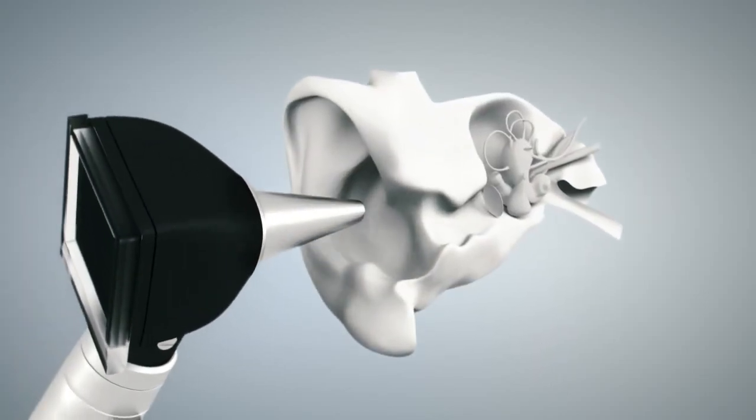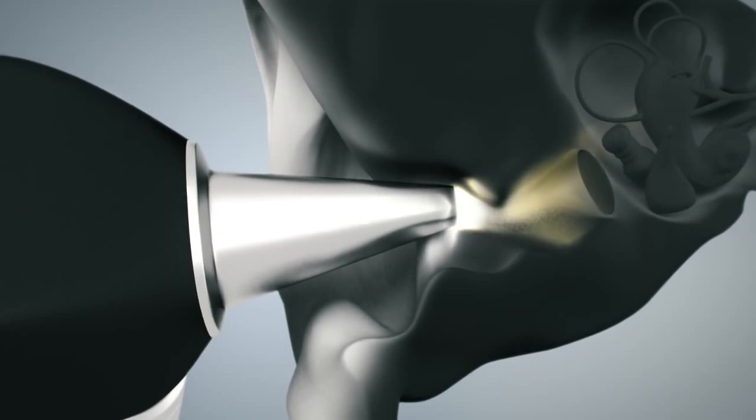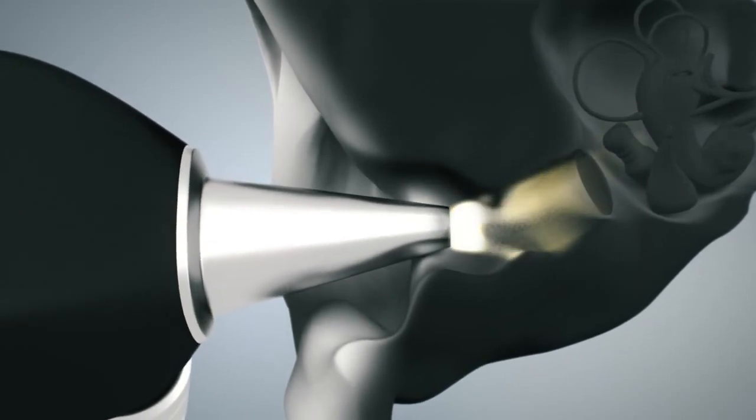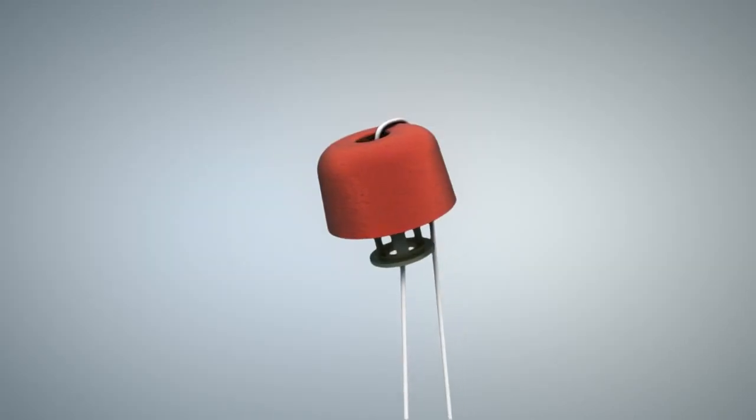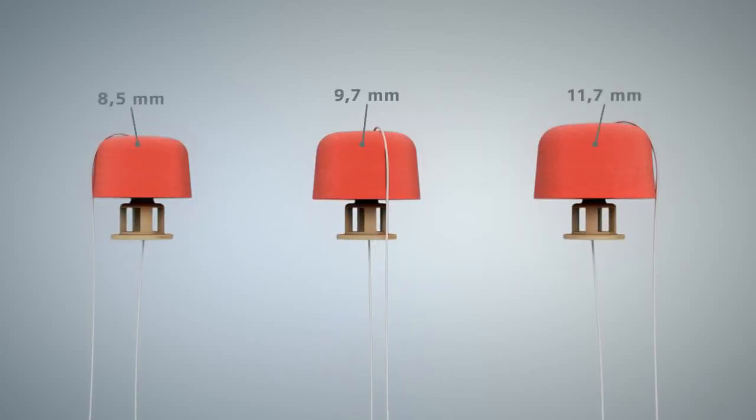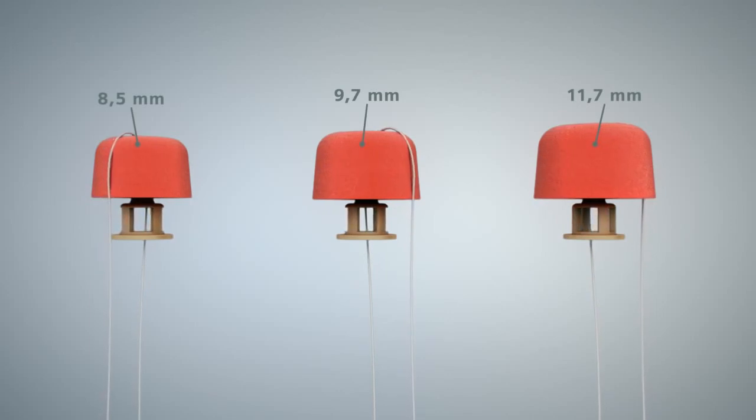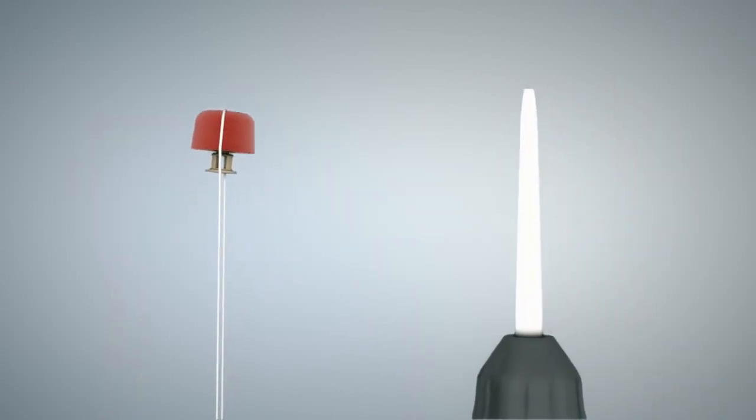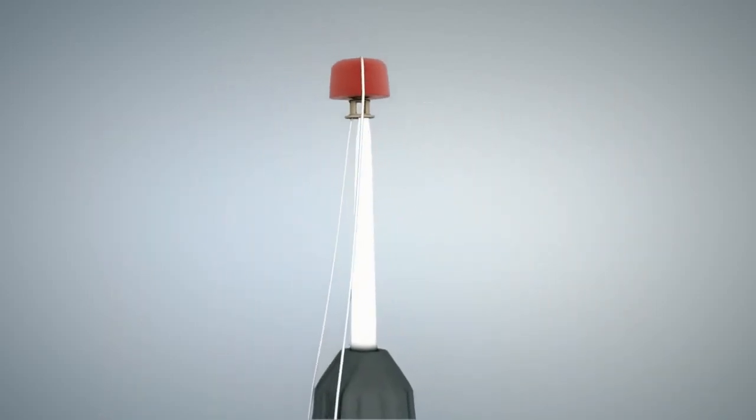First, inspect the ear canal with the otoscope as you would for any other ear impression. Instead of a cotton ball, use the impression dome as an autoblock. Choose the dome size which is appropriate to the size of the ear canal. Place it on the tip of the light stick. So far, so good.